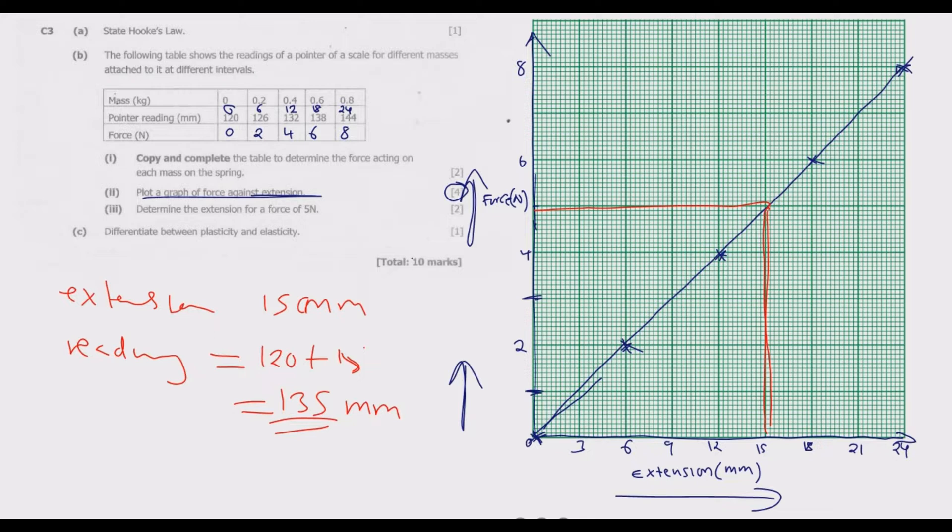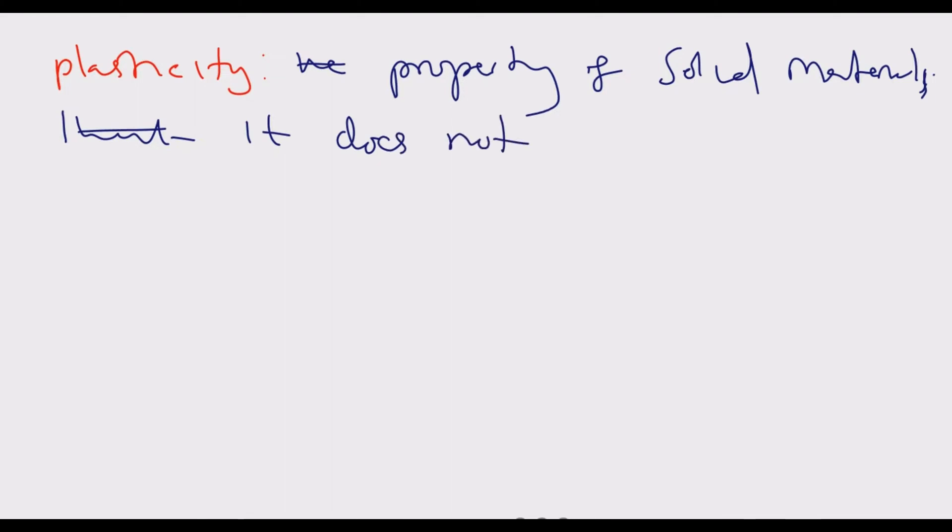We go to question C: Differentiate between plasticity and elasticity. The idea is to distinguish the two. When you're talking about plasticity, this is the property of solid materials that it does not gain its original shape and size after the removal of applied force.